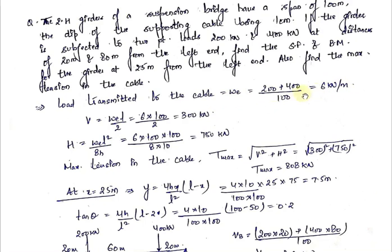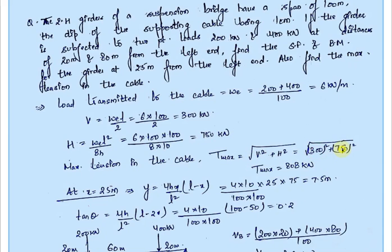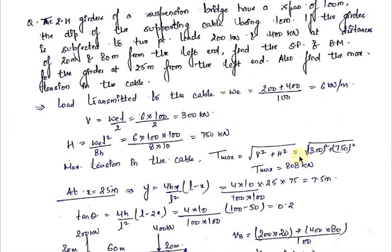From this value we can find out V and H. V is the vertical reaction and H is the horizontal thrust. H can be calculated by the formula w_e × L² / 8h, which comes out to be 750 kN. The maximum tension in the cable, T_max = √(V² + H²). Putting in the values, T_max comes out to be 808 kN.